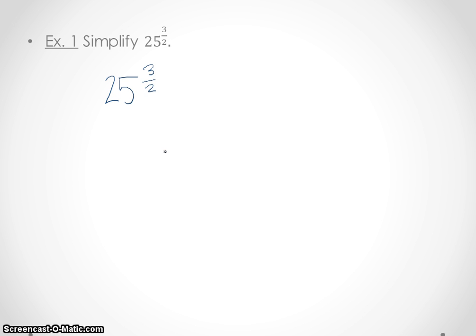Example one: simplify 25 to the 3/2 power. Using the rule we just had, I'll rewrite that: 25 to the 3/2 power, and we're going to break that apart. I'm going to write this as 25 to the 1/2 power — keeping the 2 on the inside — and then take the 3 and put it on the outside. These are equivalent expressions because if I take a power to a power, we multiply: 3 times 1/2 gives you 3/2, which is where we started.